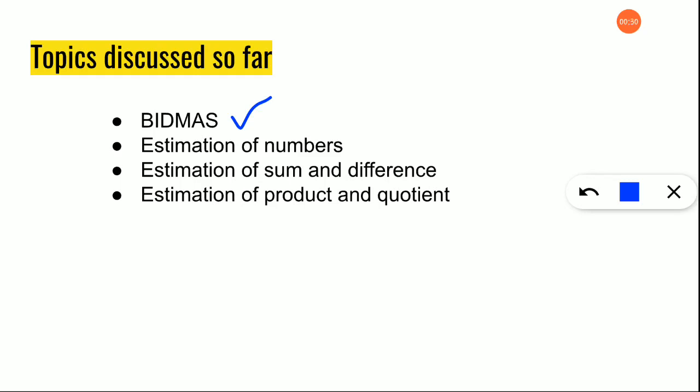What is estimation of numbers? You will just round off a value. How do you round off a value? Suppose this is the number given and they are asking you to round off to the nearest tens place. You have to check which is the tens place first — here ones and tens, three is the tens place.